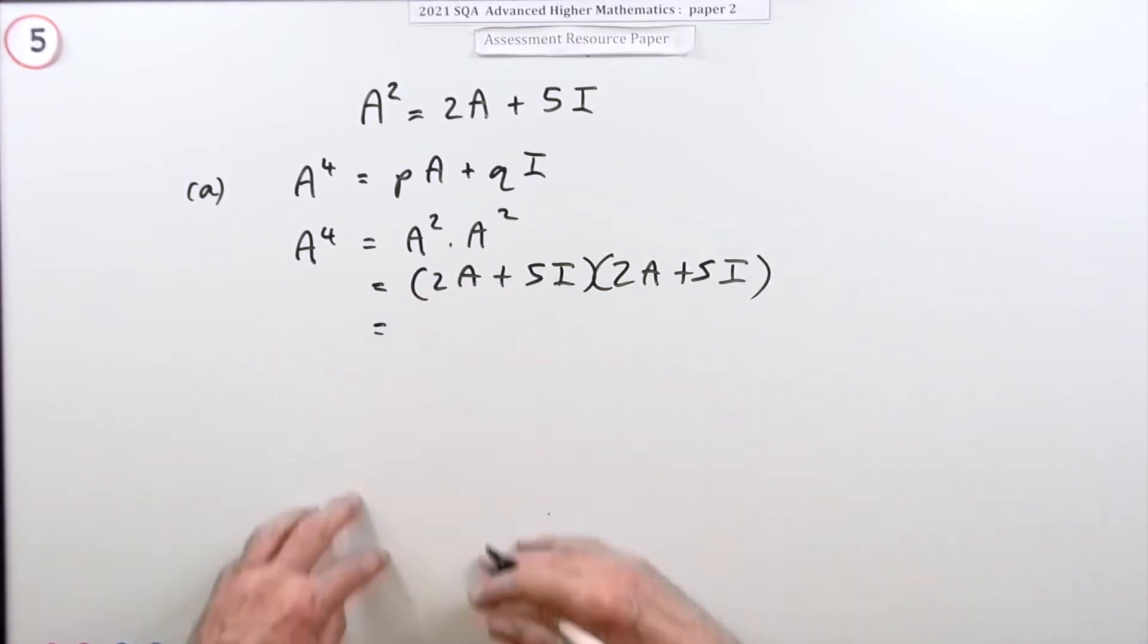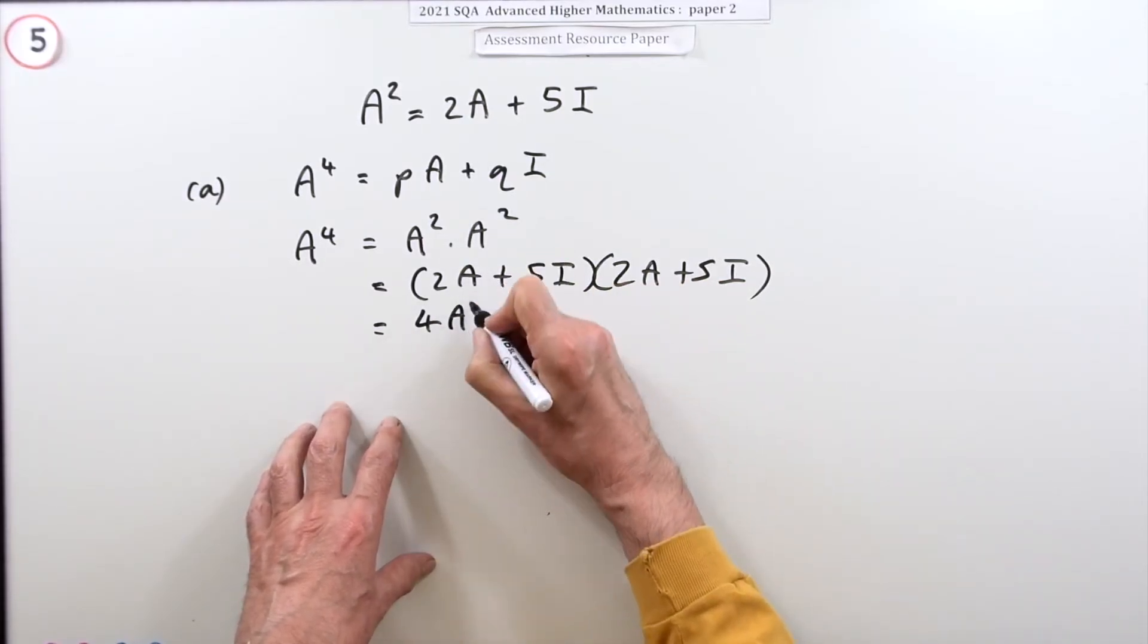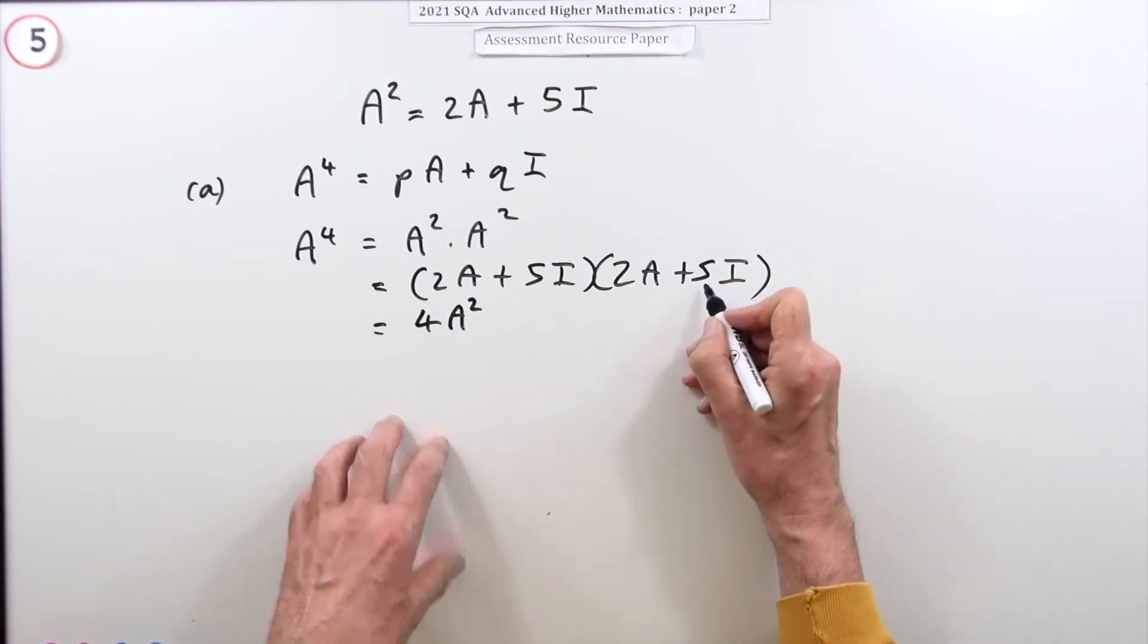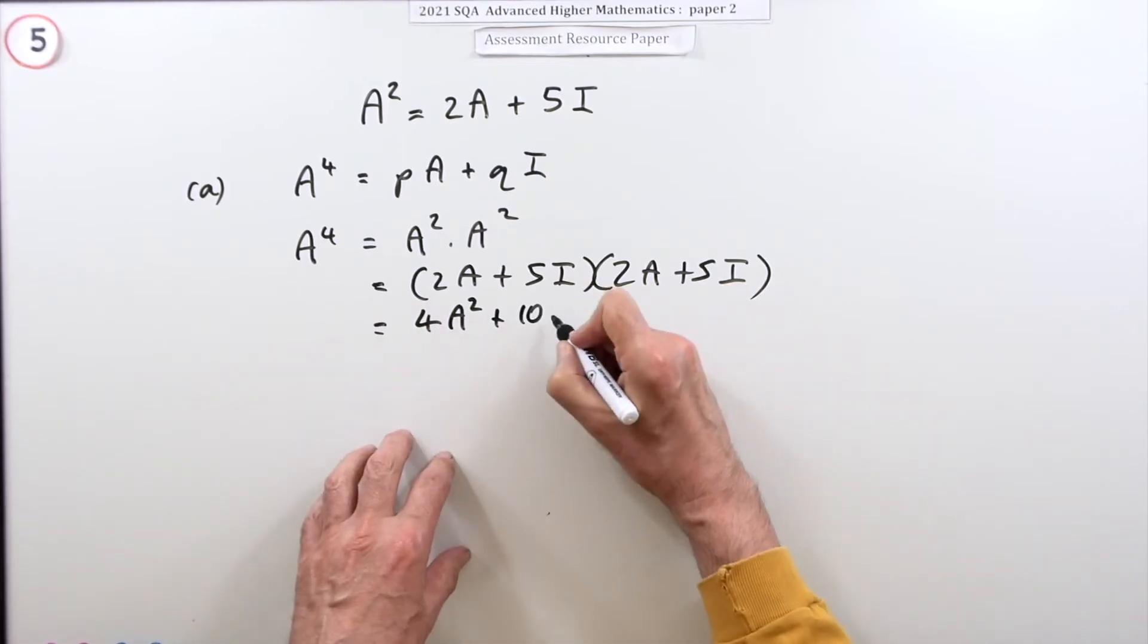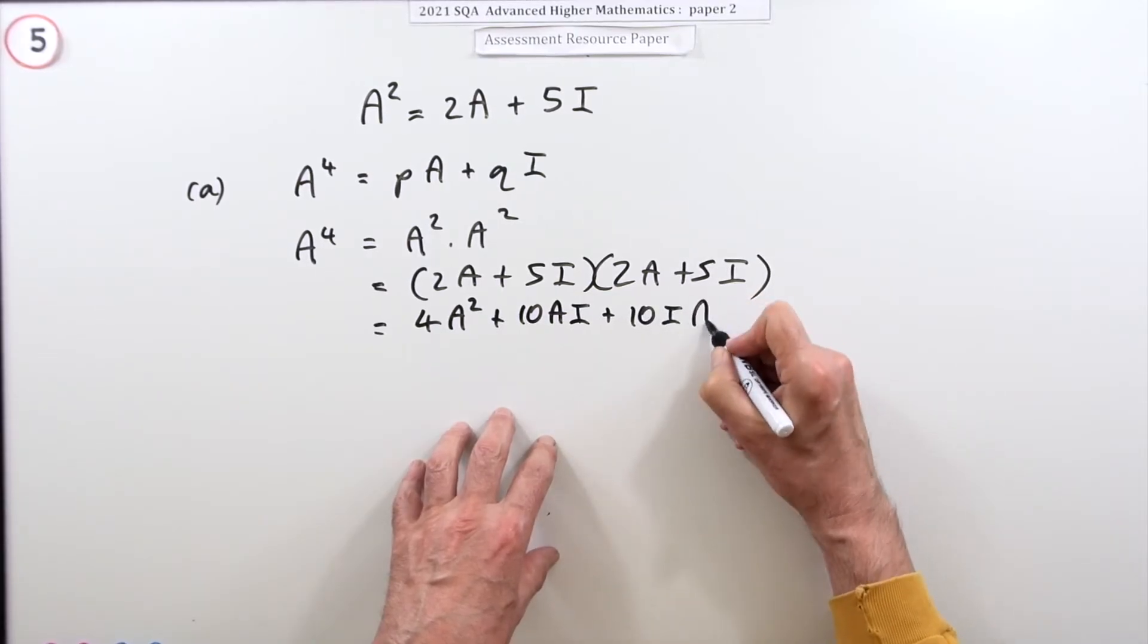I'm not going to make it too big here, I won't have room down below. So multiplying out, that's 4A² plus 10AI...